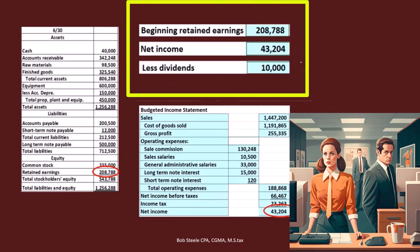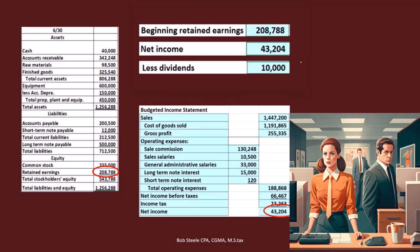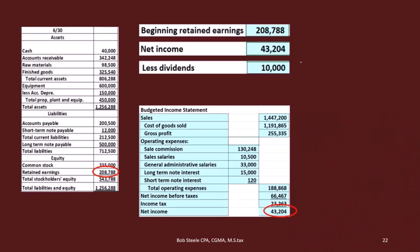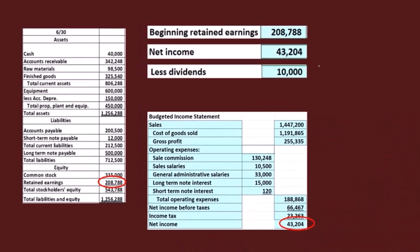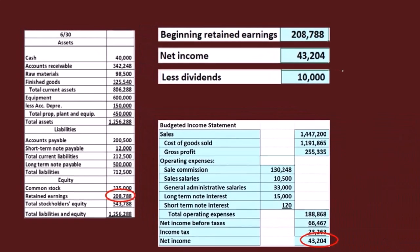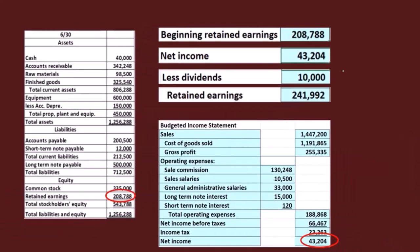We recorded the dividends in the cash budget, so that's where the $10,000 is coming from. We've budgeted the amount that we're going to pay out, and that will give us the ending retained earnings.